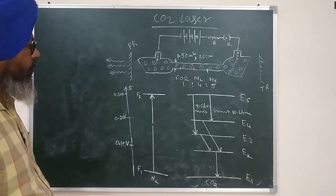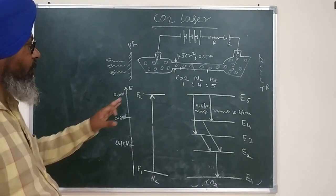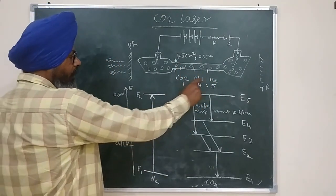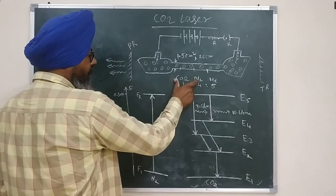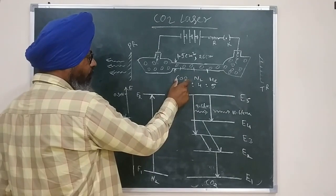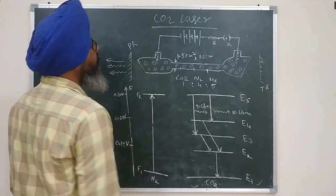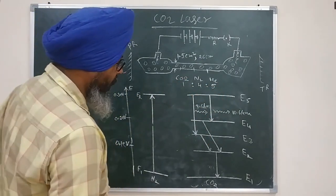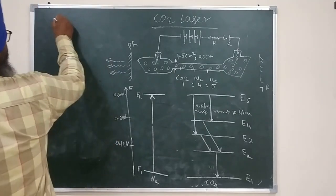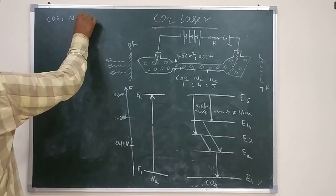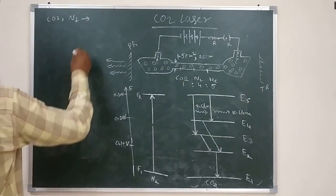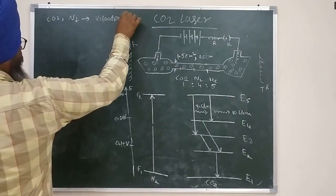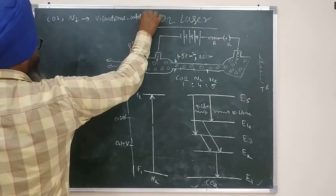The discharge tube contains three main gases: CO2, nitrogen, and helium. CO2 and nitrogen are linear molecules — CO2 contains three atoms per molecule and nitrogen contains two atoms per molecule. Both are linear molecules. Helium is a monatomic gas. Please remember that CO2 and nitrogen, being linear molecules, can show vibrational and rotational degrees of freedom.